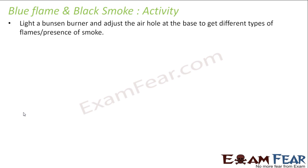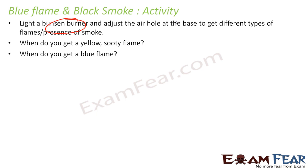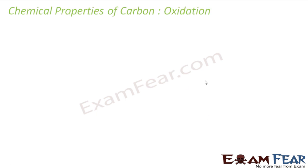There is an activity for observing blue and yellow flames using a Bunsen burner in the lab. You adjust the air hole at the base of the burner. If you block the hole completely, you see a yellow sooty flame with smoke because the air supply is limited. When you open the hole and allow proper air supply, you get a clean blue flame.